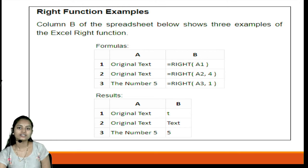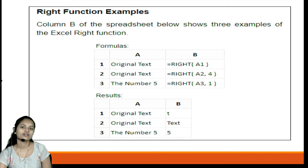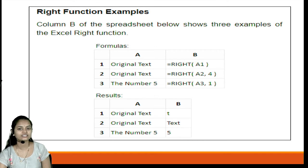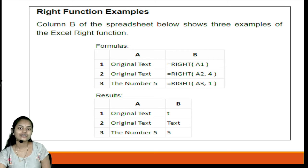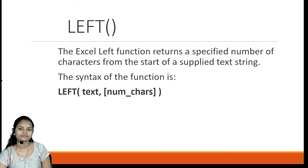The RIGHT function examples are shown in column B of the spreadsheet. In the first example, the function =RIGHT(cell) is applied to the original text. If you do not provide a num_chars argument, it returns only the last one character. In the second example, =RIGHT(A2, 4) is applied, where 4 is the num_chars argument, so it returns the last four characters from the string.